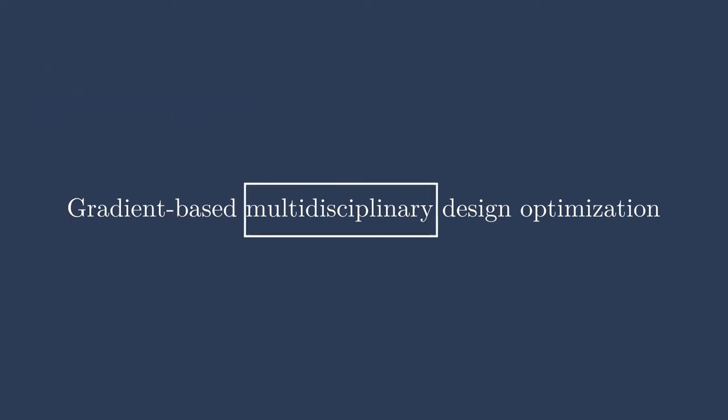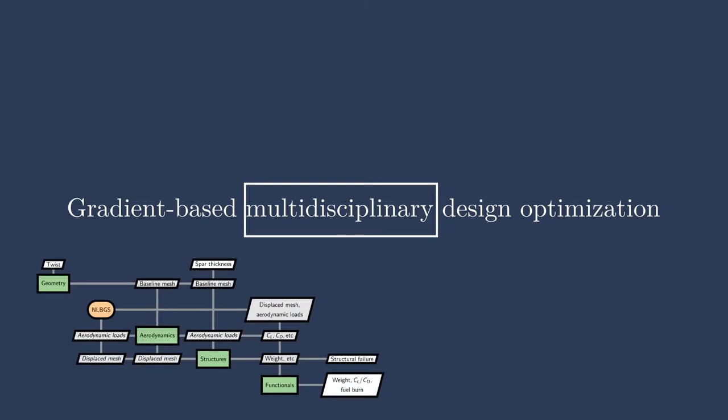Next up, we have multidisciplinary. If you break this down, it has to do with having multiple disciplines in your model. Here we have an XDSM structure showing an aerostructural wing design case. We have geometry as one discipline, aerodynamics, structures, and functionals. When I say multidisciplinary, it can be two to N disciplines, where N could be a huge number. In conceptual aircraft design you might care about 20-plus disciplines, and the same for floating offshore wind turbine design. Just know it has to do with trade-offs between different disciplines or analyses.